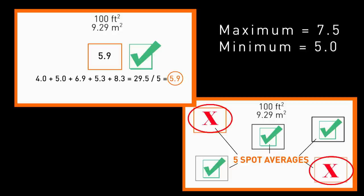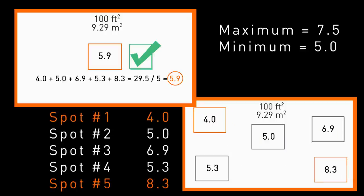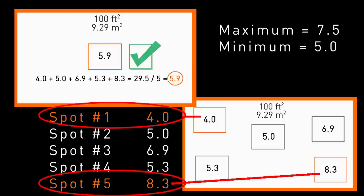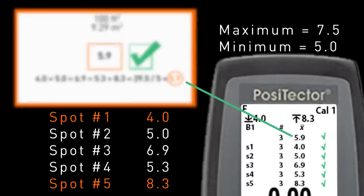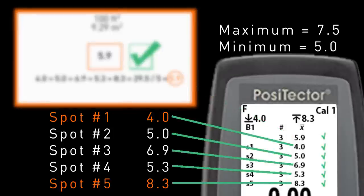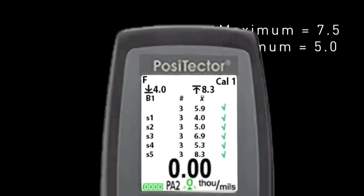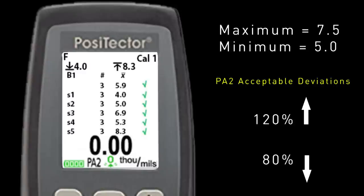Let's further explain by analyzing the individual spots. Notice that although the spot average passes, spots 1 and 5 are both outside the minimum and maximum respectively. As long as the 100 square foot area average passes, SSPC allows the individual spot some flexibility to drift below and above the minimum and maximum, specifically within 80% of the minimum and 120% of the maximum.